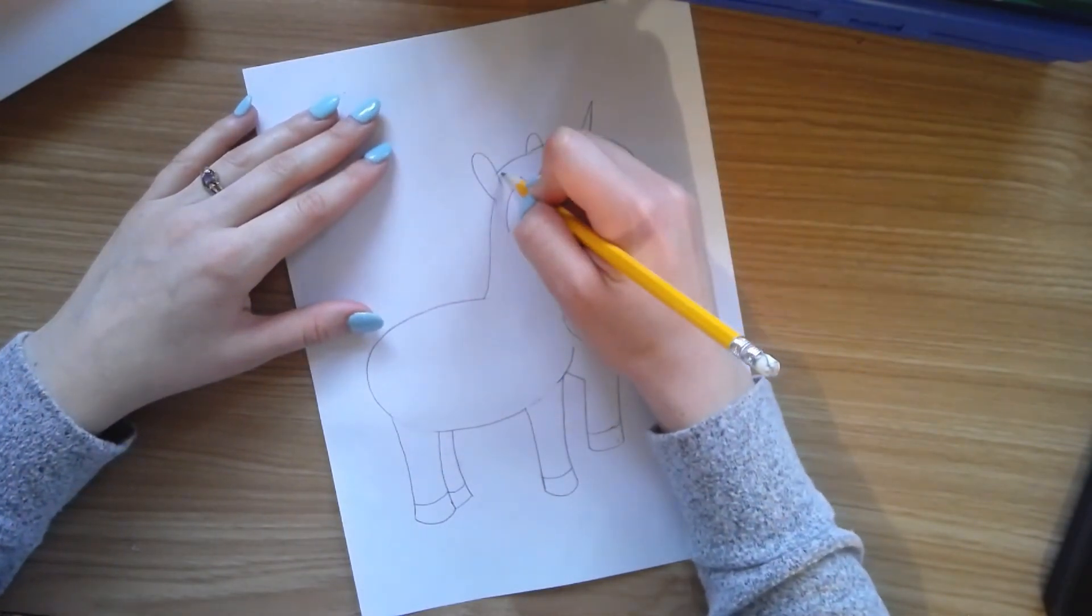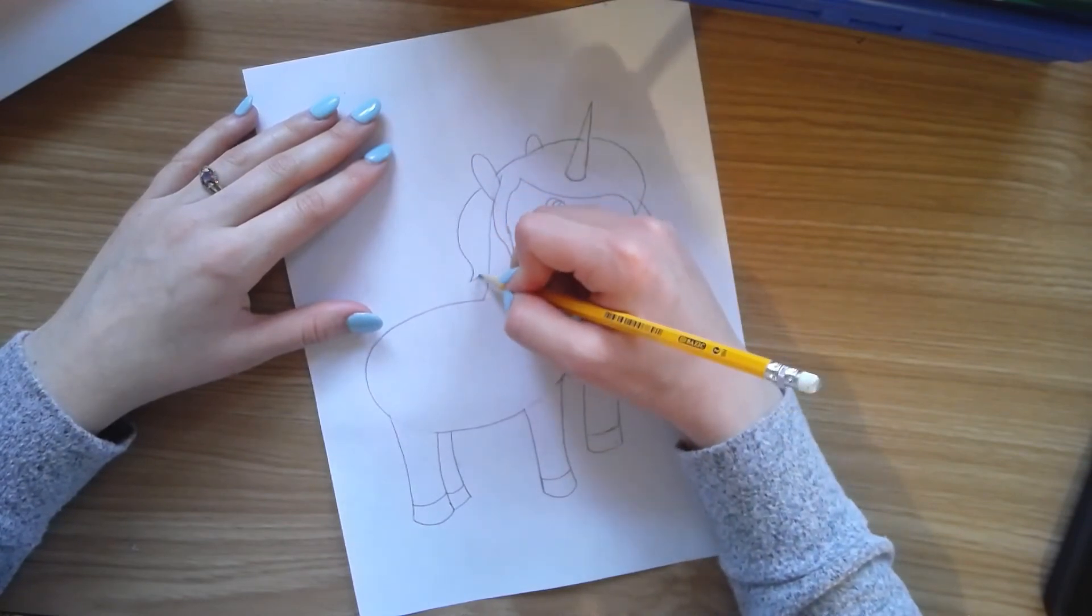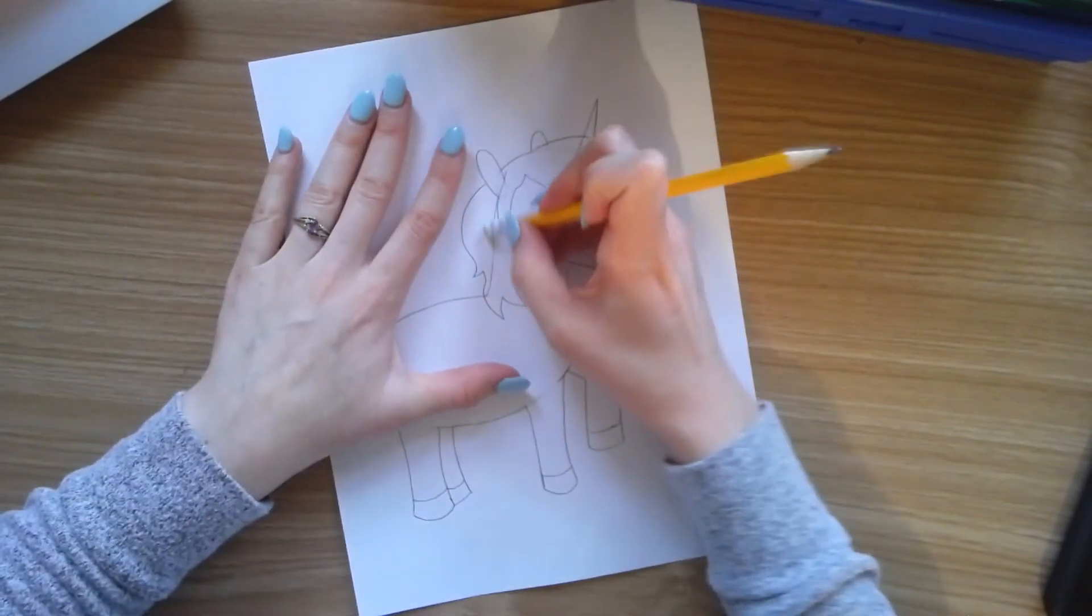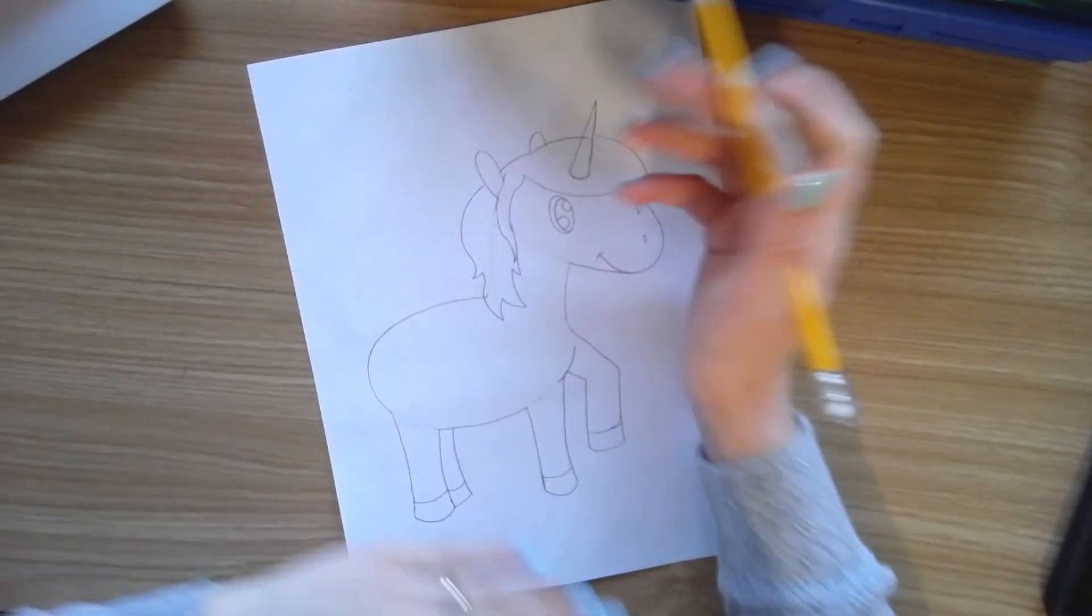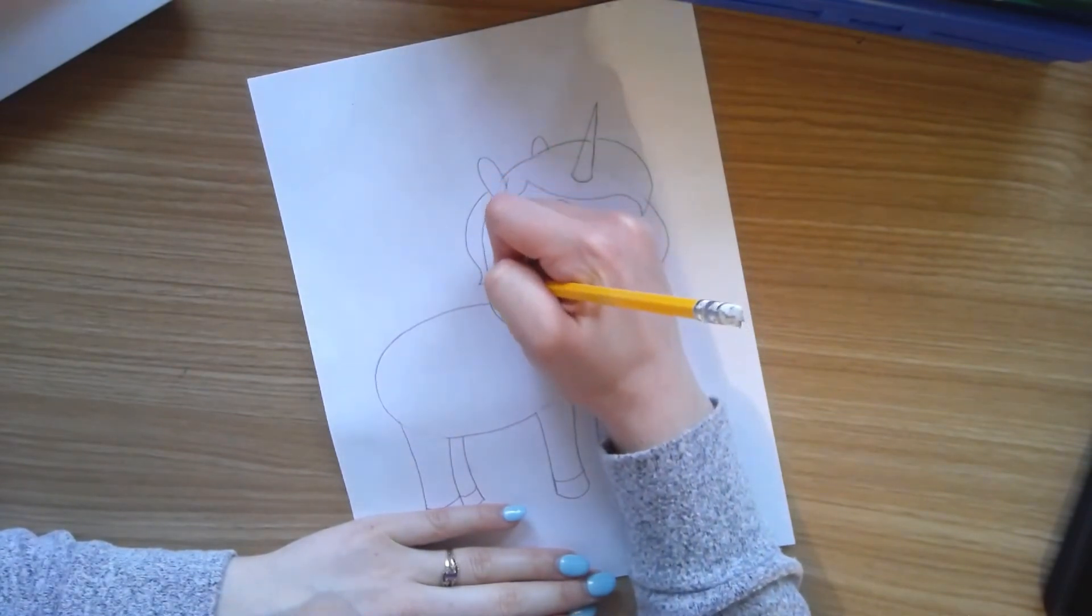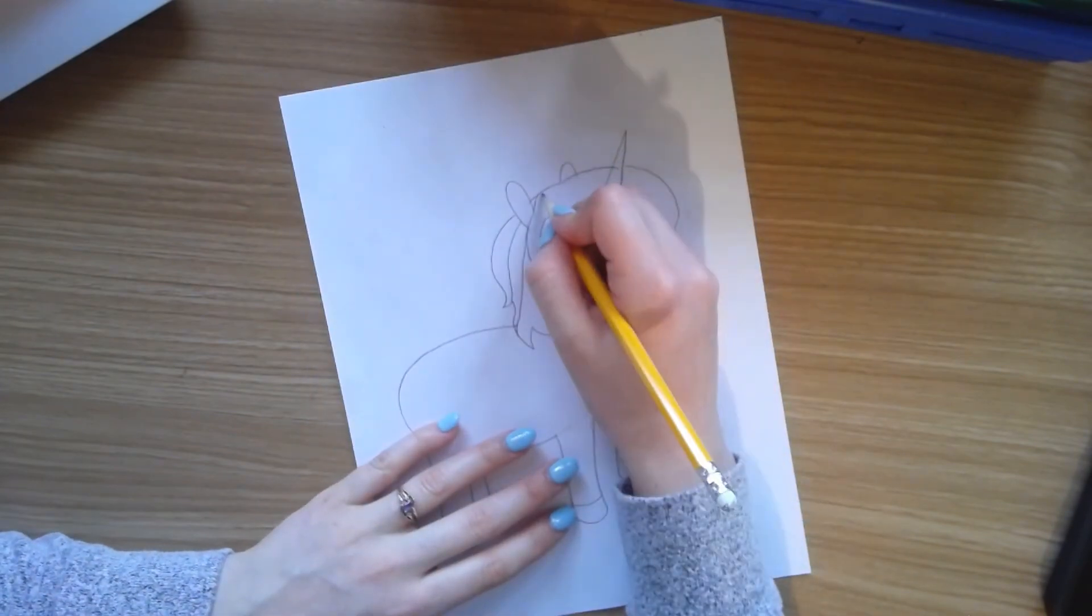Draw kind of pointy, wavy lines for the mane. Draw a couple lines down so you can have spots to color.